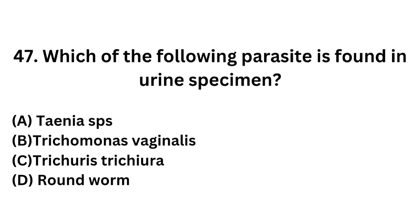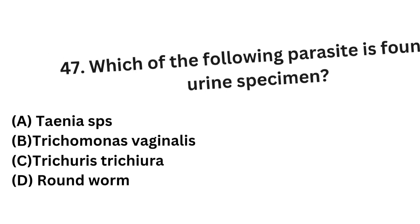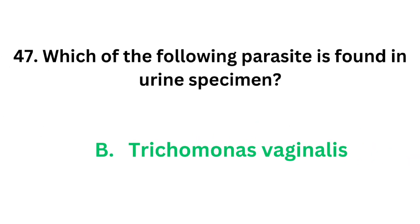Question number 47: Which of the following parasite is found in urine specimen? Option A: Taenia species. Option B: Trichomonas vaginalis. Option C: Trichuris trichiura. Option D: Roundworm (Ascaris lumbricoides). Taenia species, Trichuris trichiura, and roundworm are intestinal parasites. So the correct answer is option B, Trichomonas vaginalis, which is found in the female genital tract and can be seen in urine specimen.